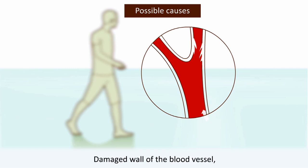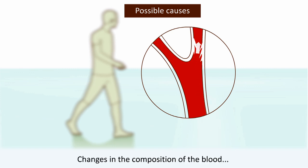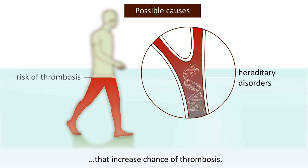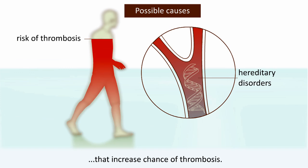Possible causes of thrombosis can be damaged wall of the blood vessel, changes in the composition of the blood, and slow blood circulation. There are also some hereditary disorders that increase the chance of thrombosis.